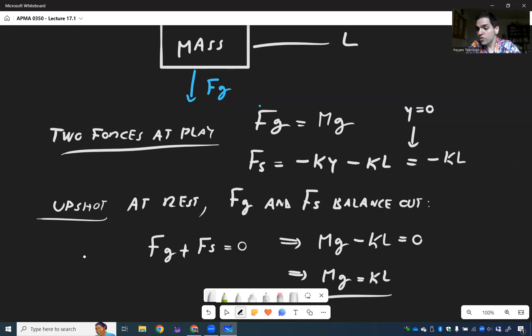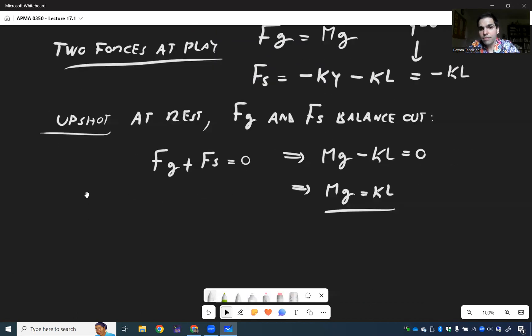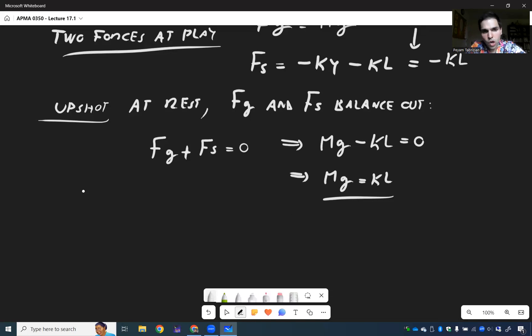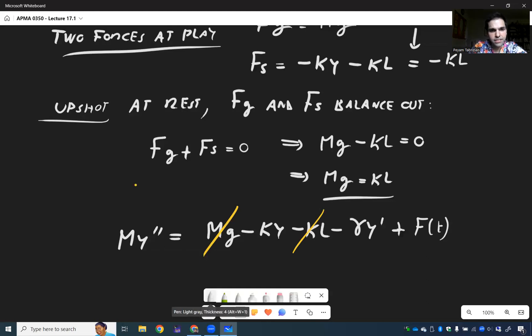So remember what we have: MY double prime equals MG minus KY minus KL and then minus gamma Y prime plus F of T. Now the quantities MG and KL, they cancel out. They're constant. And if you now put everything on the left-hand side, so all the Y terms, you get MY double prime plus gamma Y prime plus KY equals F of T.